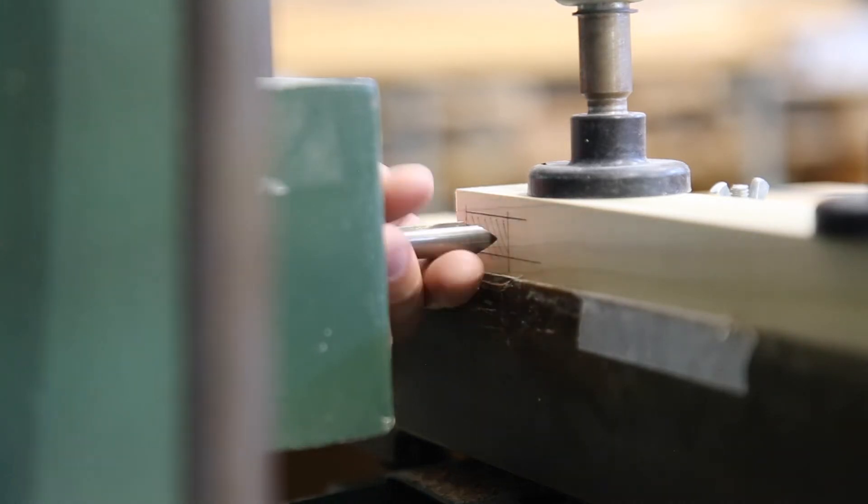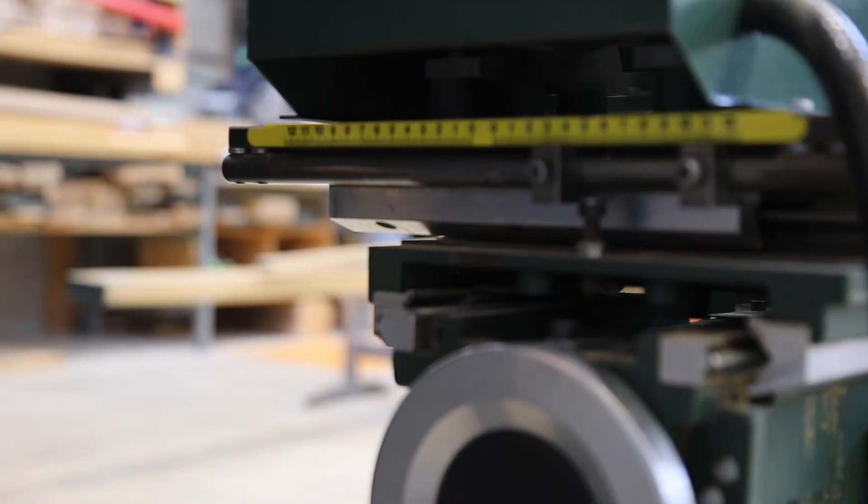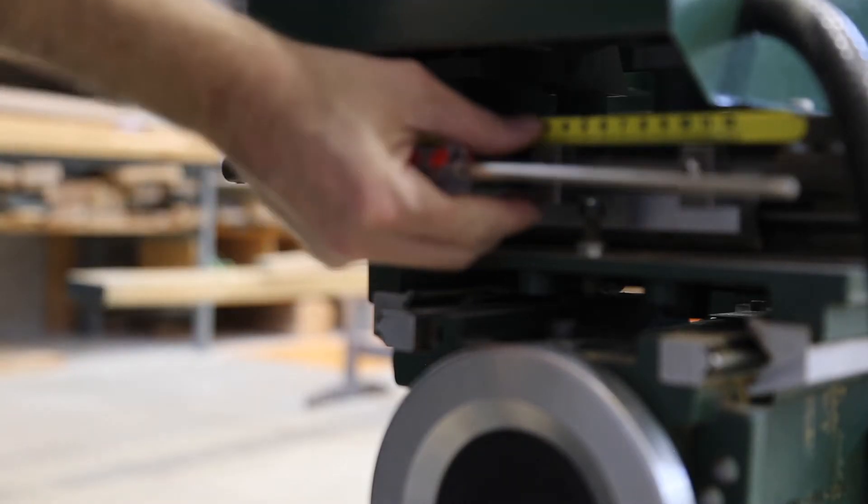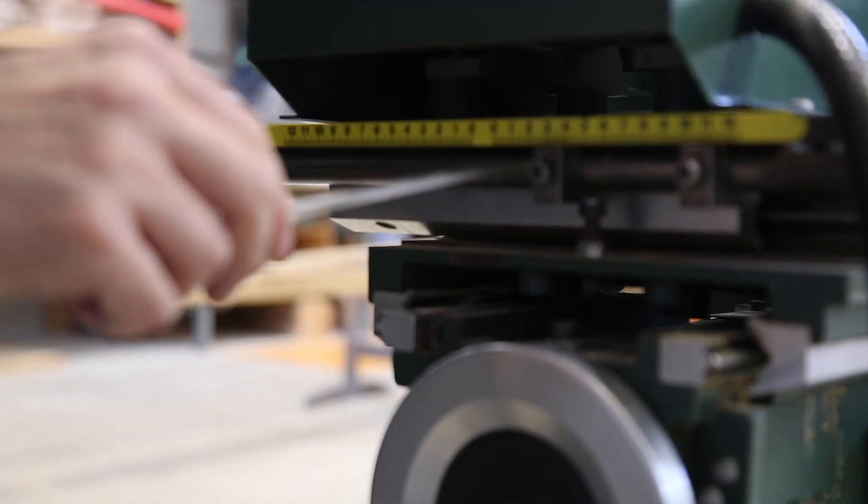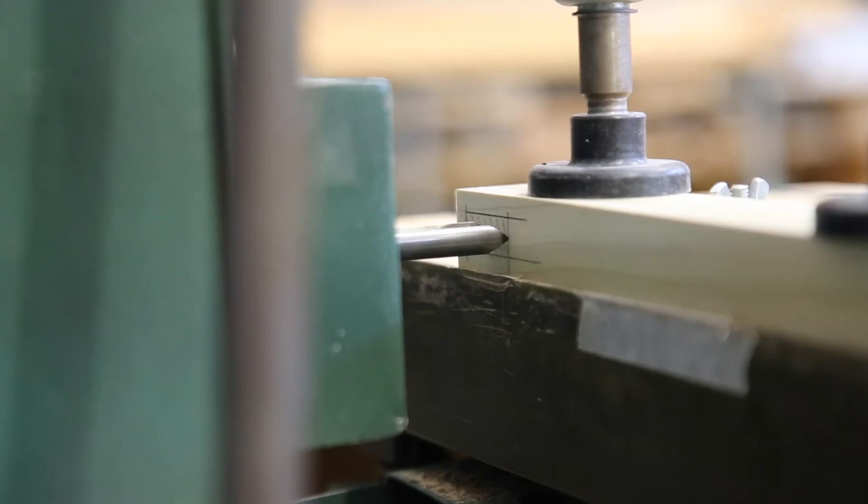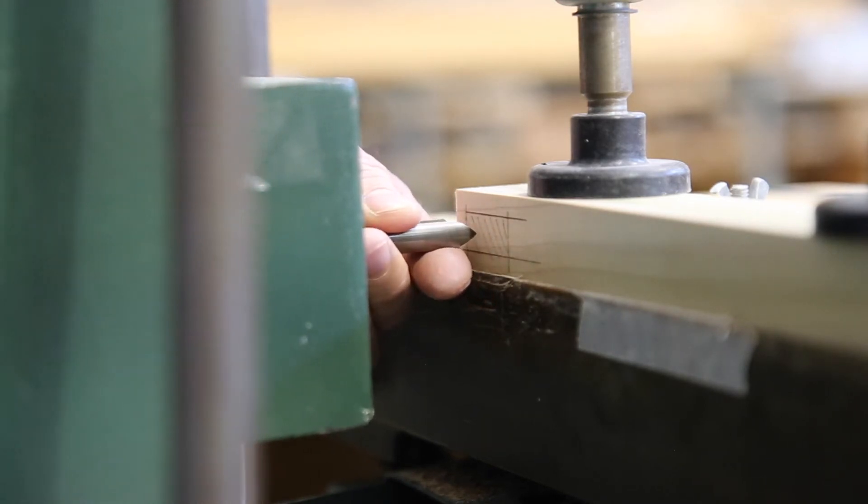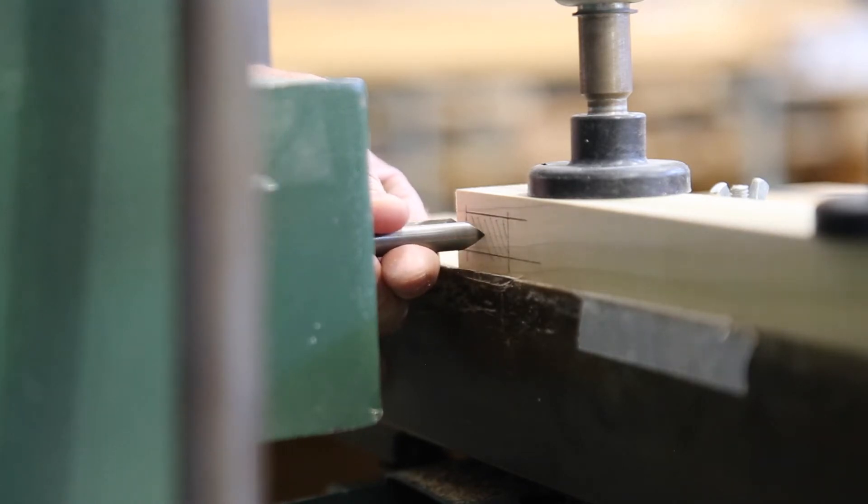Set the bit to align with the right side of your marked out mortise. Pull the stop on the left hand side of the rail to touch the pin and lock it in place. It's somewhat counterintuitive but the left stop controls the right most limit of travel and the right stop controls the left most limit. Next set the bit to align with the left side of the marked out mortise and set your right hand stop on the back of the machine.